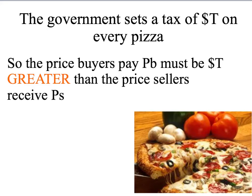Now suppose that the government puts a sales tax of T dollars on every pizza — say two dollars fifty. The price the buyers pay, which we'll call PB, must be exactly T dollars greater than the price the seller receives, which we'll call PS. If there's a tax of two dollars fifty on a pizza and you go into a store and pay seventeen dollars fifty, two dollars fifty by law goes to the government and the seller gets to keep fifteen dollars. So the price the buyer pays is simply T dollars more than the price the seller receives.